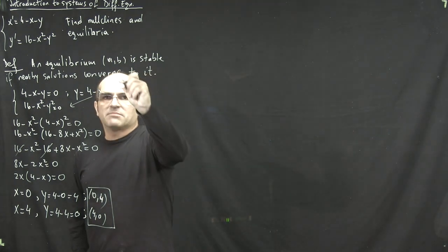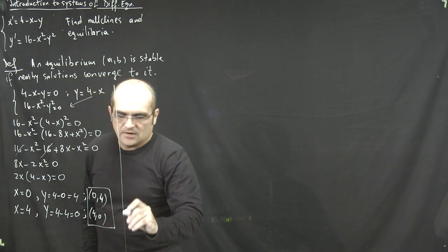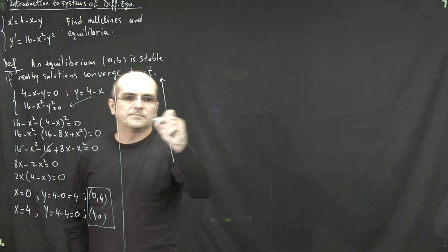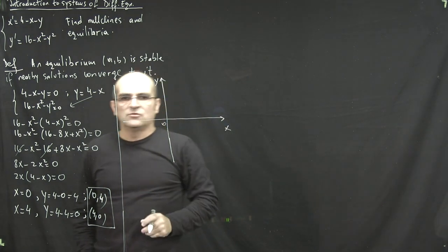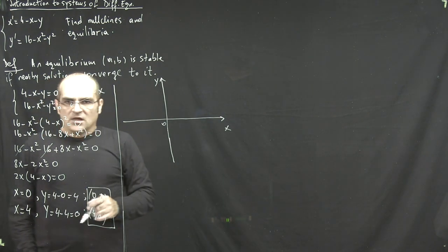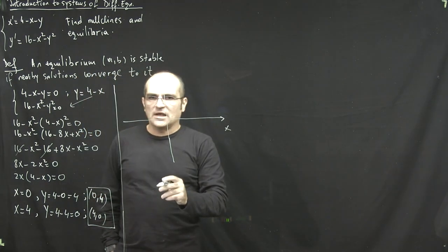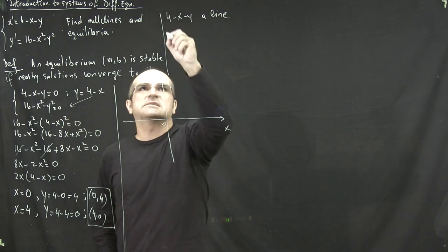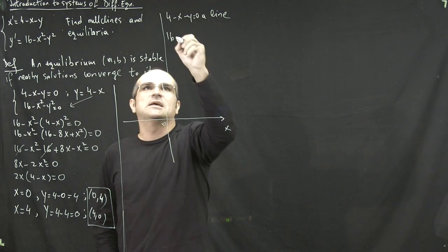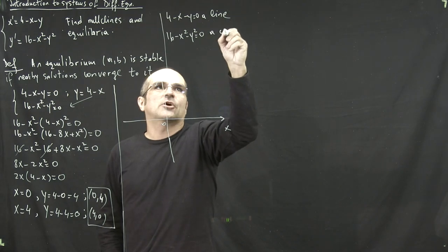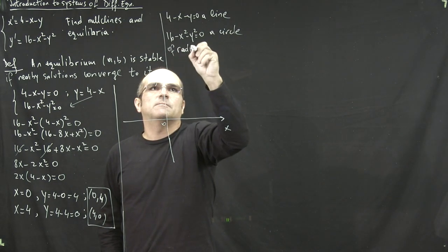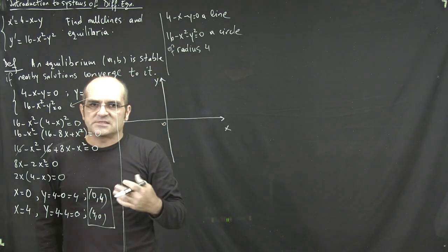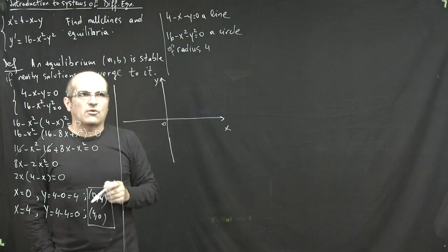Now let's sketch the two null lines. The first null line, 4 minus x minus y equals 0, is a line. The second, 16 minus x squared minus y squared equals 0, which can be rewritten as x squared plus y squared equals 16, is a circle of radius 4 centered at the origin. We already know the two curves intersect at (0, 4) and (4, 0).